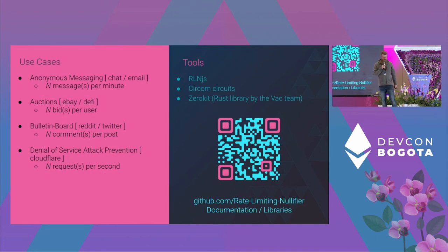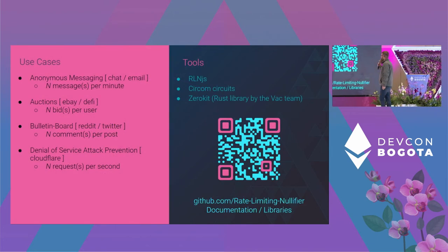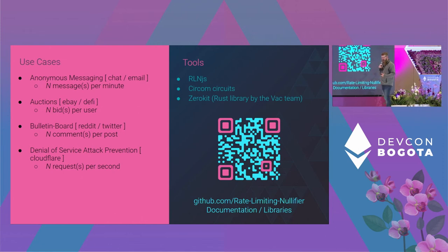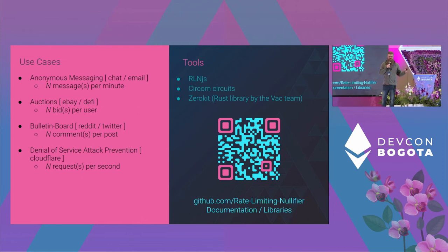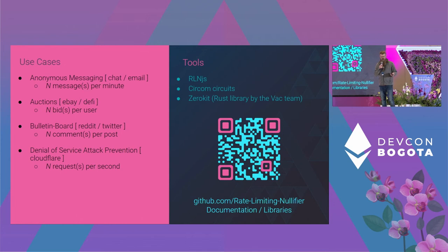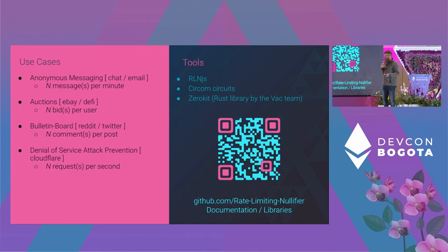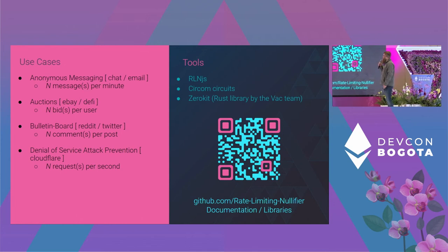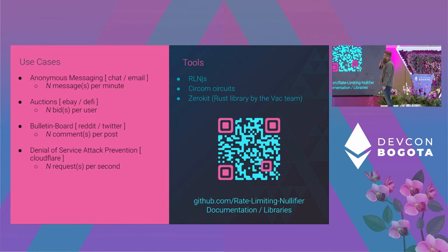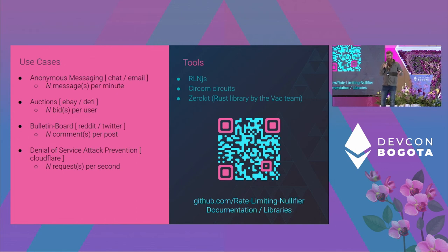Some use cases we thought of: you could do auctions where you can have only so many bids per item or per user. You can have a bulletin board system like Reddit where you can only comment once per post, or once per level of post. We've also thought about using this for preventing denial of service attacks for something like Cloudflare, doing that anonymously and decentralized.